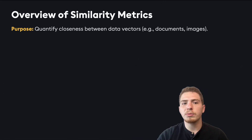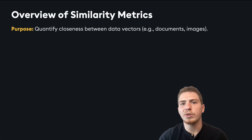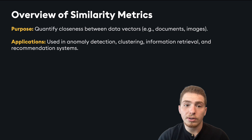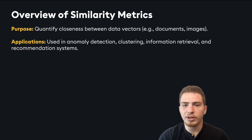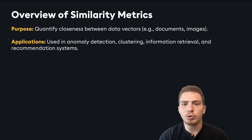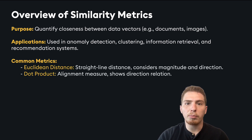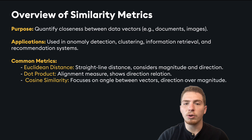There are a few similarity metrics, but they all quantify the closeness between data vectors. These data vectors could represent your documents, images, or any other kind of data. They're used in a wide variety of applications, including anomaly detection, clustering, information retrieval, and recommendation systems. Some common metrics include Euclidean distance, dot product, and cosine similarity.